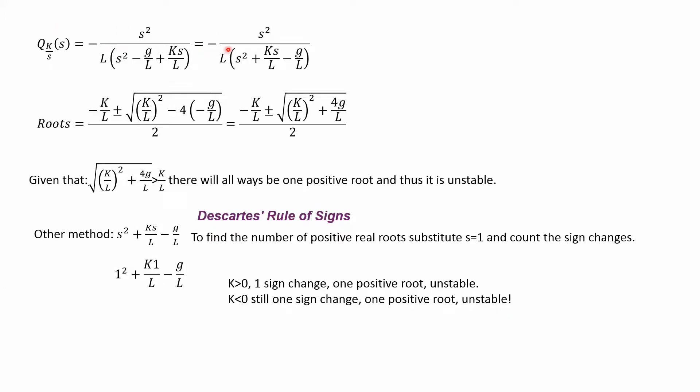I rewrote the equation here. Let's look at the roots—the poles. I have -K/L. The formula is -K/L ± √[(K/L)² - 4(-g/L)] divided by 2. I'm concerned about this part. That minus times minus gives me 4g/L. The square root of this on the positive end will always be greater than this, so there will always be one positive root and thus it's unstable.